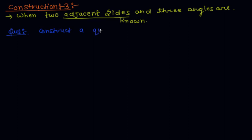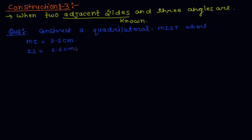Construct a quadrilateral MIST, where side MI is equal to 3.5 cm, side IS is equal to 6.5 cm, angle M is equal to 75 degrees, angle I is equal to 105 degrees, and angle S is equal to 120 degrees.